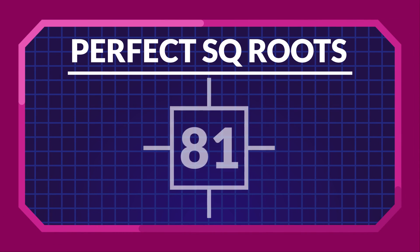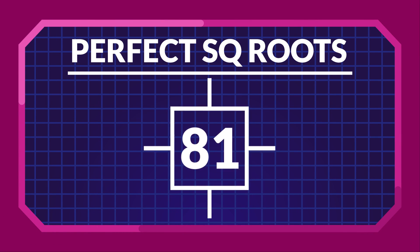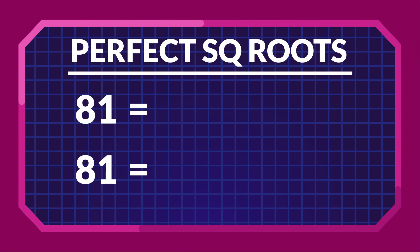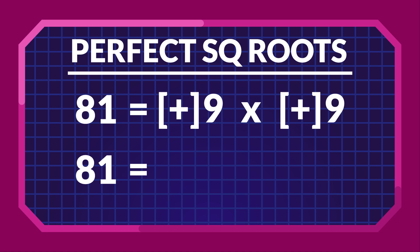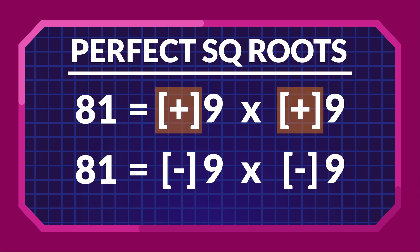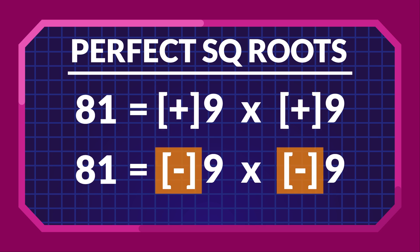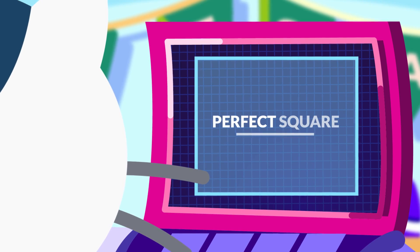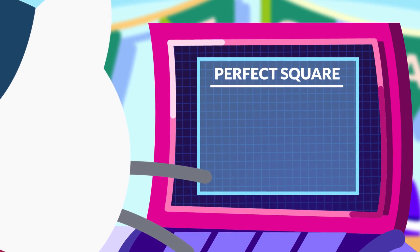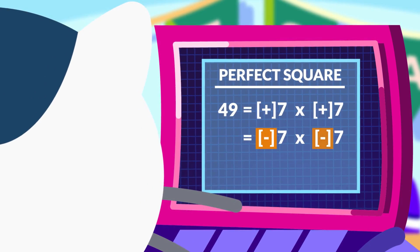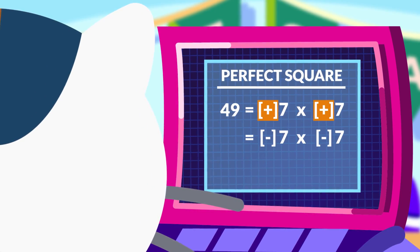All perfect squares have two sets of square roots. Consider the perfect square 81. The product 81 can be obtained by multiplying two sets of integers: 9 times 9, and minus 9 times minus 9. A positive value of 9 multiplied by itself yields 81, just like a negative value of 9 will. Similarly, the square roots of 49 are minus 7 and plus 7.